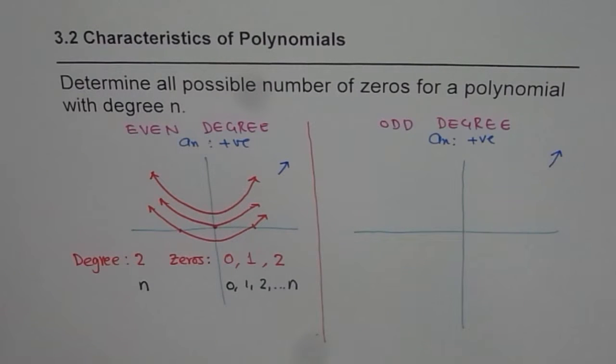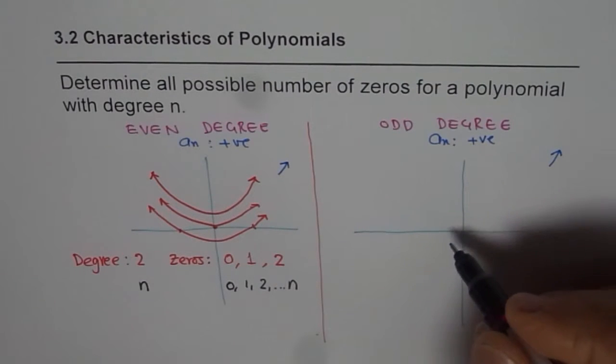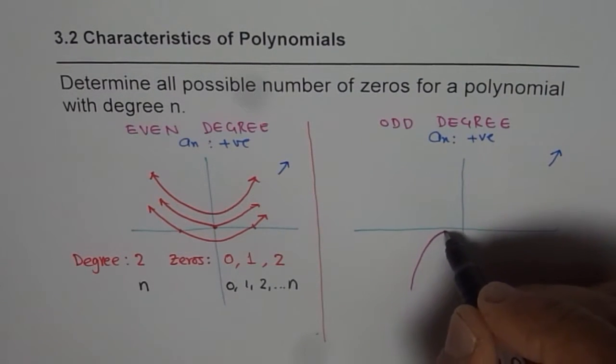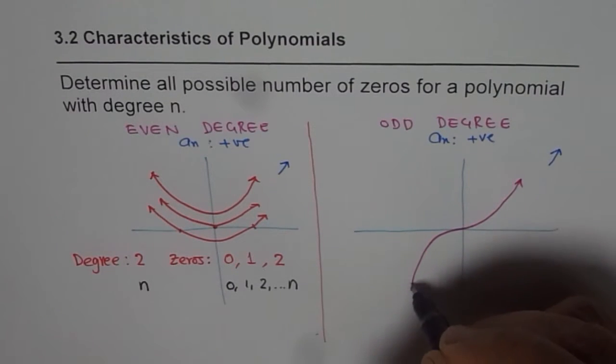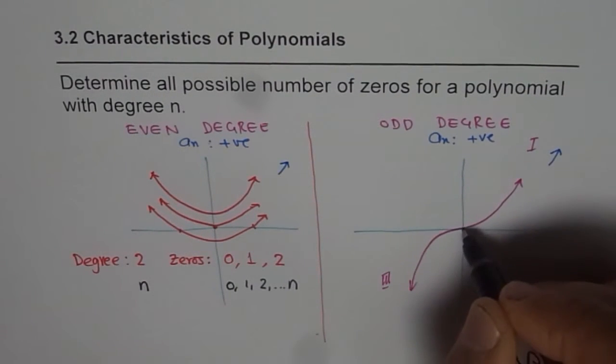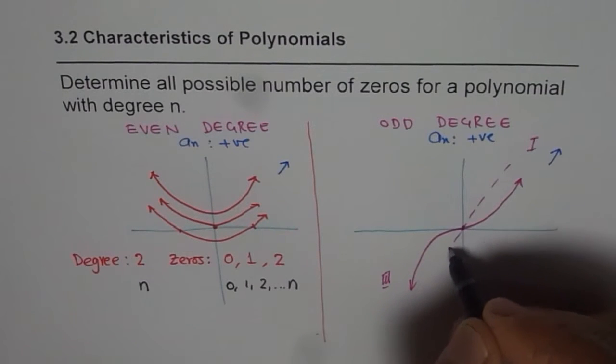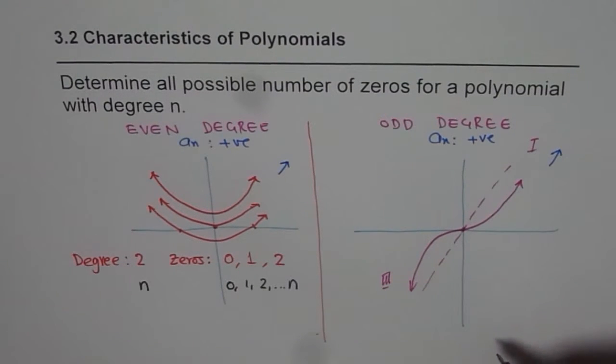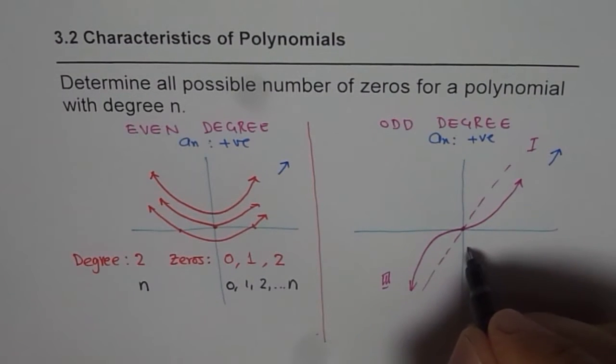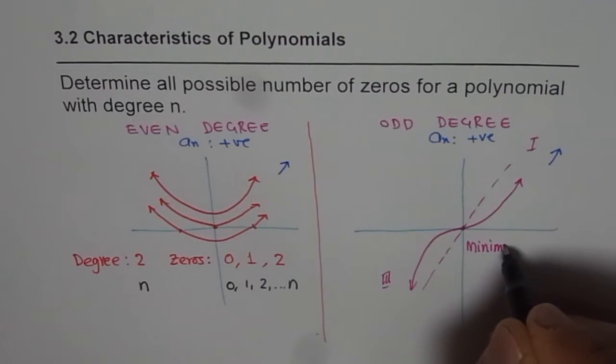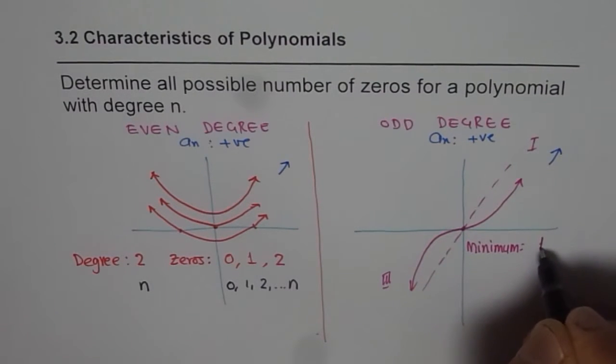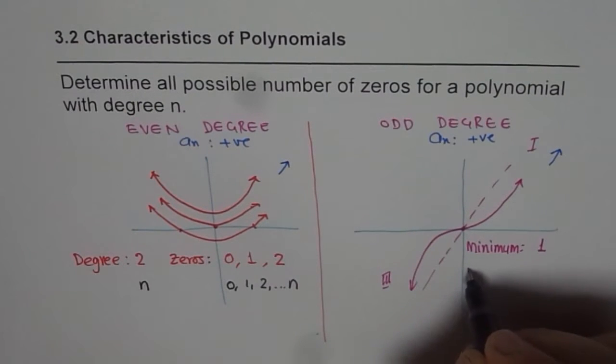Now let us consider an odd degree polynomial. To start with, we can take a cubic function. The cubic function will be kind of like this. Since an odd degree function moves from quadrant three to quadrant one, they have to cross the x-axis. So they will definitely have at least one zero. Even if you take a line, it has to cross the x-axis, so it will have at least one zero. So what we notice is that the minimum number of zeros is one.